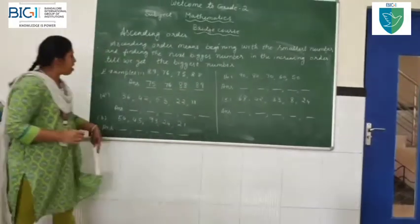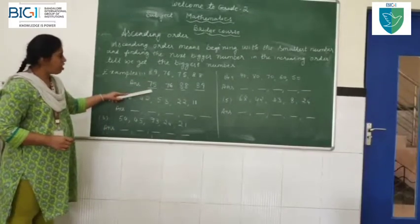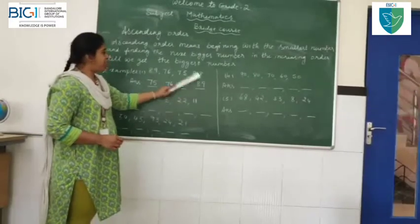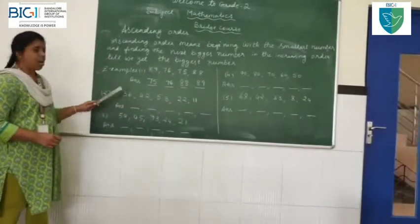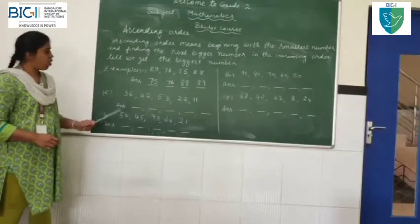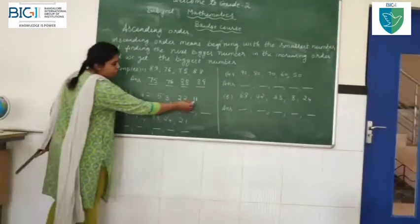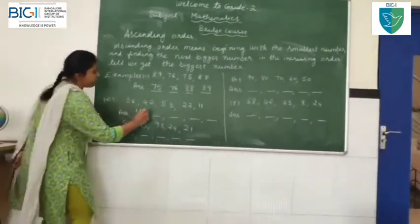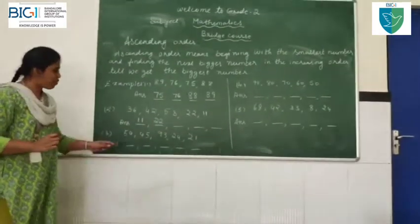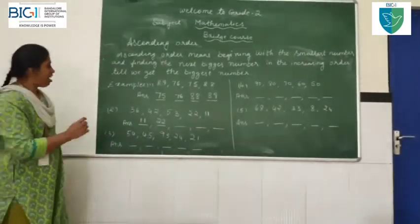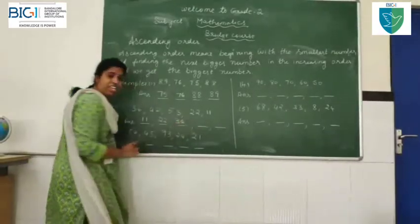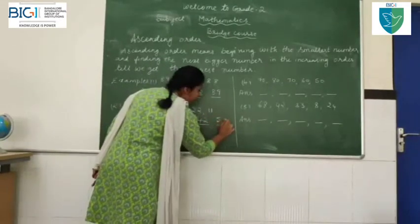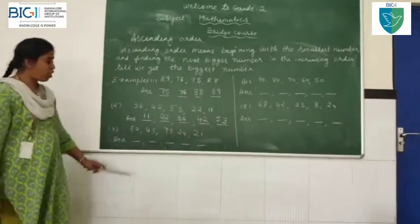See, children, in this given set of numbers, we always start from the smaller number to the next bigger number, until we get the last biggest number. Now I will start with the ascending order for the next example. What is the smallest number? 11. Next bigger number after 11, then after 22, comes 36. After that, 42. After 42, 53.